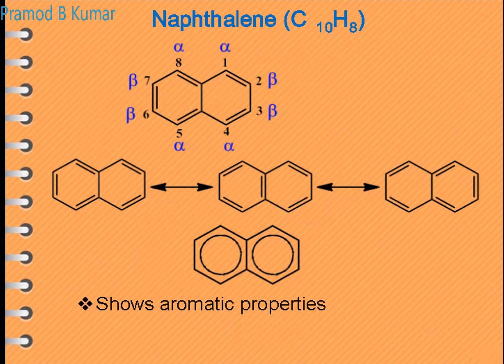Now let us start with naphthalene in detail. It contains two rings, numbered 1 through 8, with bridging carbons 4a and 8a. Position 1 is alpha, 2 is beta, 3 is beta, 4 is alpha, 5 is alpha, 6 is beta, 7 is beta, and 8 is alpha.